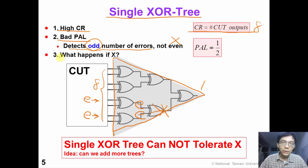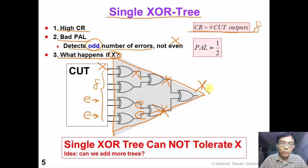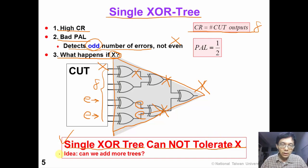Another problem with this exclusive-OR tree is that it cannot handle unknown output. Suppose we have one unknown output coming in — then the whole exclusive-OR output would be unknown, so the output would be contaminated by a single X. The conclusion is that a single exclusive-OR tree cannot tolerate any X. So how can we make it better?